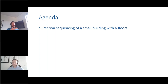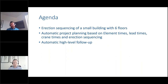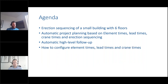First of all we'll do some erection sequencing. I made a small building earlier with six floors, so we're going to plan the erection of that building. Then we're going to have IMPACT do some automatic planning for us, and then we're going to look at a high-level follow-up that IMPACT creates out of the automatic planning. Then I'm going to tell you how you can configure element times, lead times, and crane times for IMPACT to do this automatically.